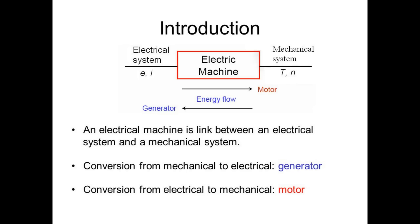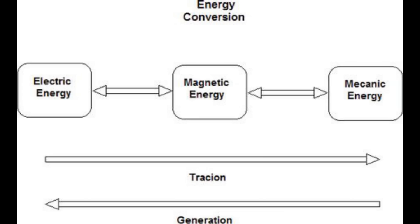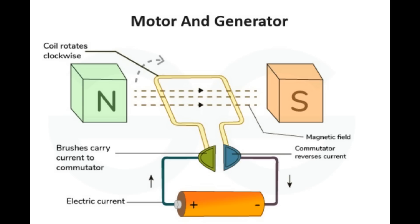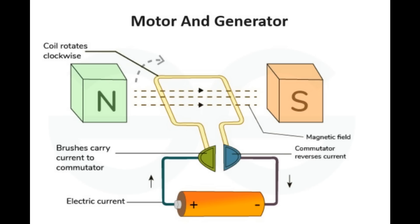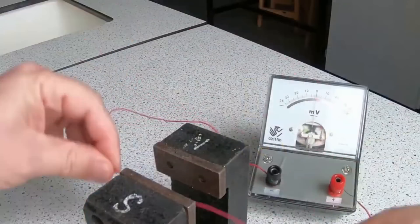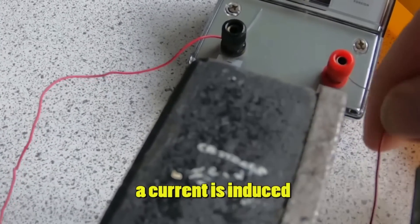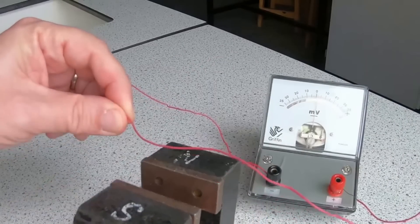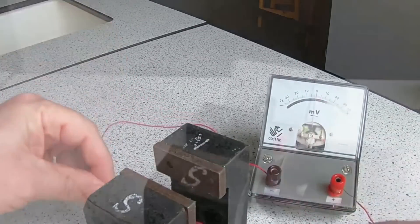There are some principles behind generators that are probably a good idea to know. When you think about generators you're also thinking about motors because they're absolutely the same machine. The only thing that differs is if you spin one, electricity comes out. If you put electricity in, it will spin. They have the same principles, just in reverse. They're an arrangement of wire and magnets. If you move a wire in a magnet you'll get a current. If you put a current in a wire while it's in a magnetic field it will move. That's why they're identical machines, governed by that extremely simple principle. Faraday is the guy we usually accredit this to.